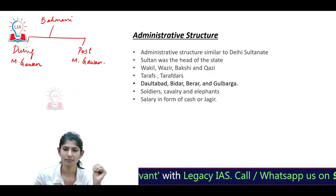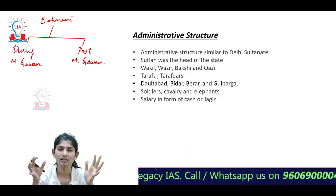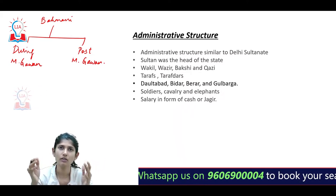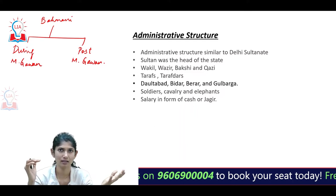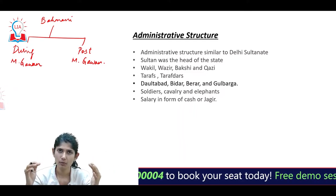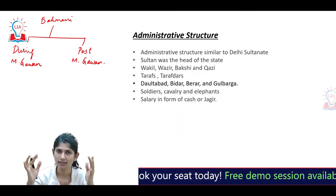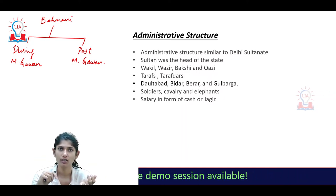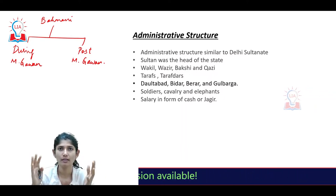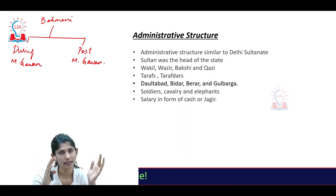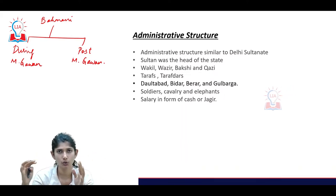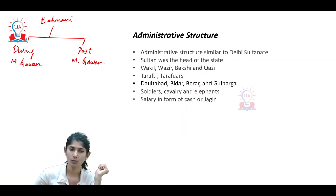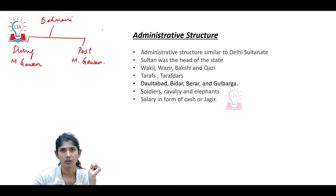The Deccan Sultanate or Bahamani Empire was run on lines similar to the Delhi Sultanate. The Sultan occupied the central authority - he had both executive and judiciary powers, and almost all important aspects of governance were under him. He governed with the help of ministers.